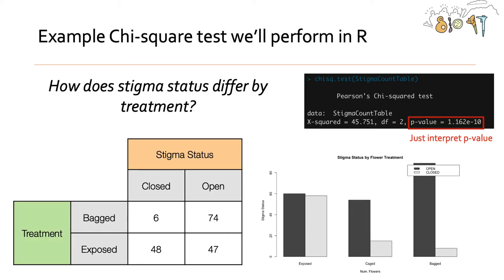So we'll do this in R, and the question that we are asking in examples.R is how does stigma status differ by treatment? So we have some observations here of how many flowers, comparing bagged and exposed, have open and closed stigmas, and we want to know if that differs by treatment. So we can visualize this a couple different ways. Here's just an example with some bar plots.